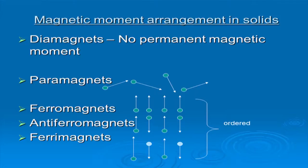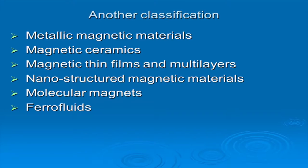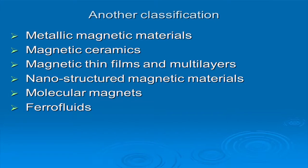Ferromagnets, antiferromagnets, and ferrimagnets all come under the category of ordered magnetic materials. Another important classification is by material type. Metallic magnetic materials — iron, cobalt, or their alloys — include many of the permanent magnets we see. Many of the permanent magnets are made of such alloys and come under this category.